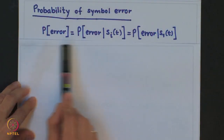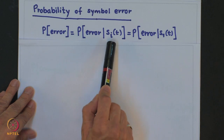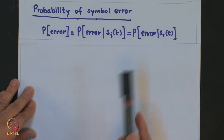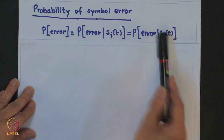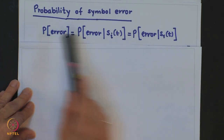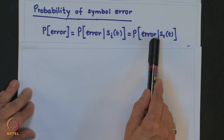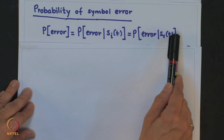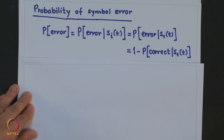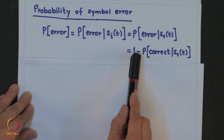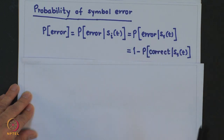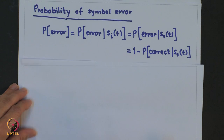Having determined the receiver, let us calculate the probability of symbol error. Since the signal constellation is symmetric, the probability of error equals the conditional probability of error given any S_i(t). Without loss of generality, we take S_i(t) = S_1(t). The probability of error equals 1 minus the conditional probability of correct detection given S_1(t), and we now compute this value.